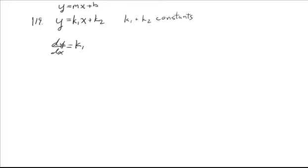It makes sense that our derivative is constant because the property of a linear function is a constant rate of change, which means the derivative will be the same everywhere.